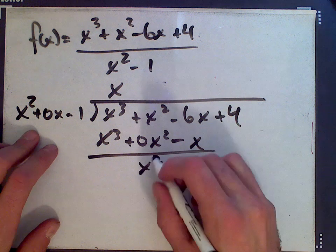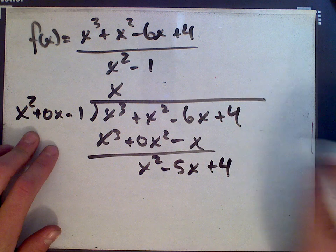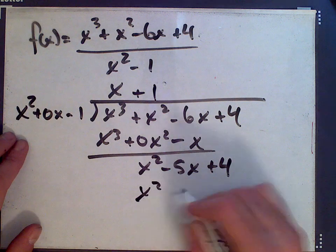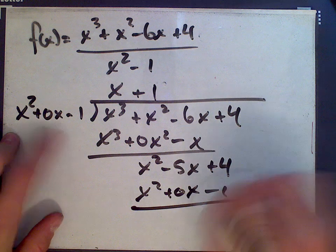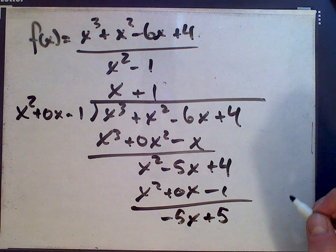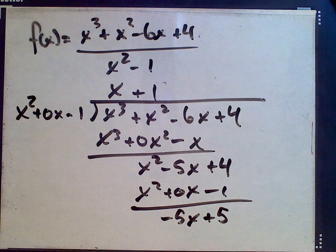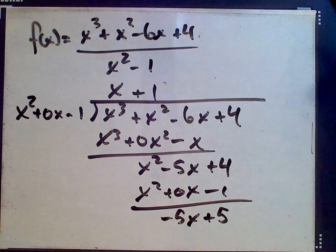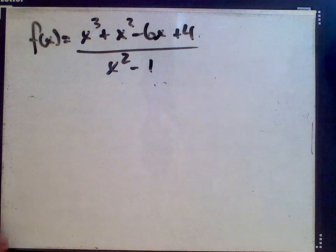We get x squared minus 5x. Bring down the 4. We need a 1 here. So we get x squared again plus 0x minus 1. So we get negative 5x plus 5 is the remainder here. So now we can rewrite our function. Double check if I've done that correctly. We have.